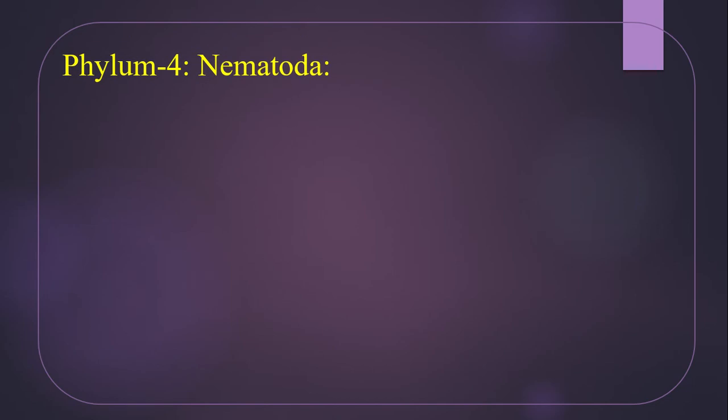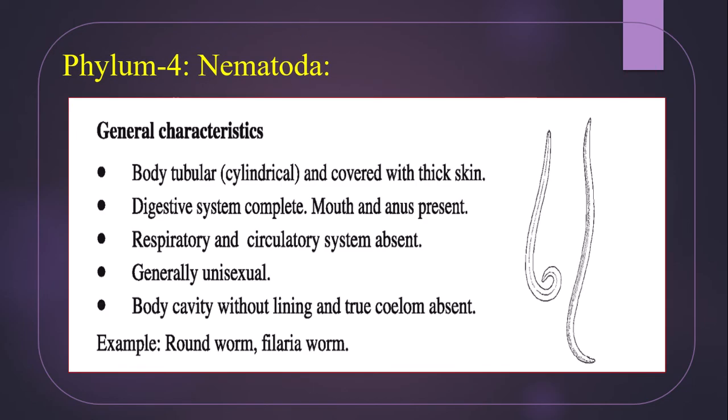Phylum four is Nematoda. General characteristics: number one, the body is tubular — cylindrical — and covered with thick skin. The digestive system is complete, with both mouth and anus present. When both mouth and anus are present, the digestive system is called complete; when only the mouth is present and anus is absent, it is called an incomplete digestive system.